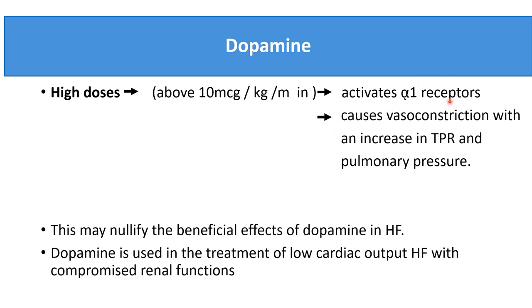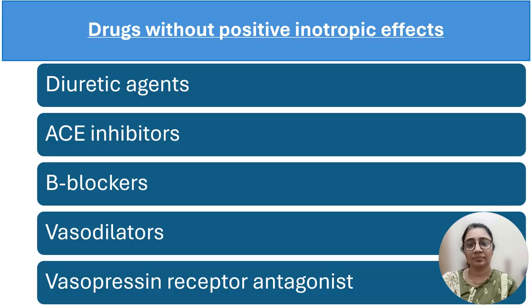At high doses above 10 micrograms per kg per minute, dopamine activates alpha-1 receptors of the blood vessels, causing vasoconstriction and increasing total peripheral resistance and pulmonary pressure. This may nullify the beneficial effects of dopamine, so dopamine should be used at lower or medium doses and should be avoided at higher doses in heart failure conditions.